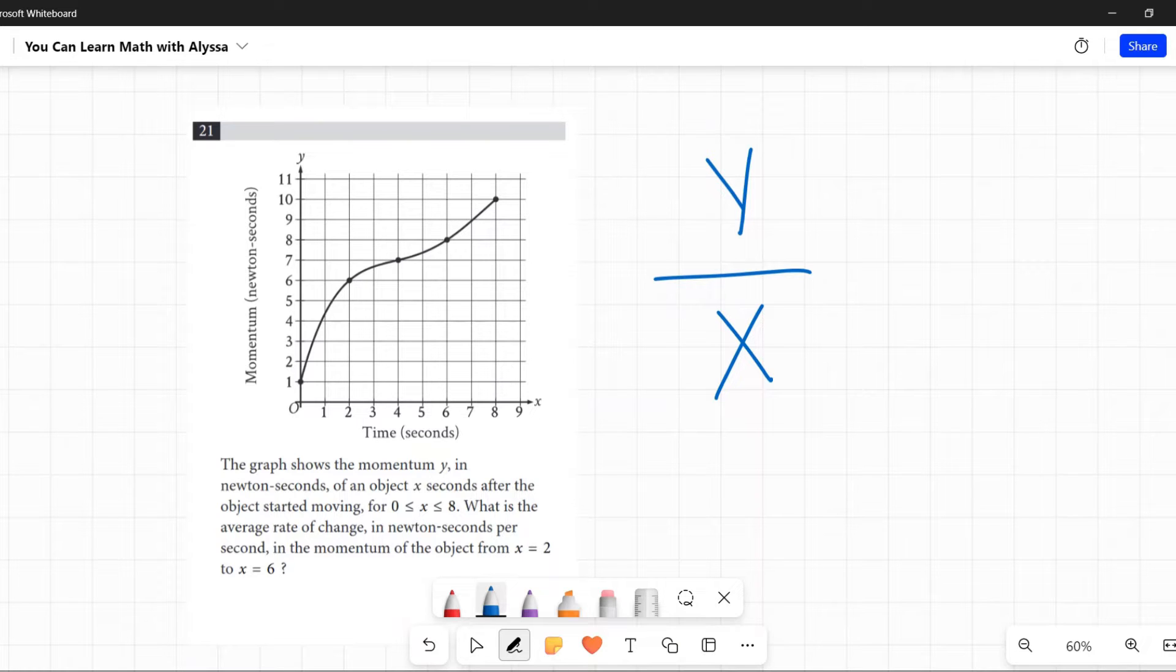Let's look at what the values are when x equals 2 and x equals 6. When x equals 2, that value is (2, 6) - those coordinates, that ordered pair. And when x is 6, it is (6, 8).